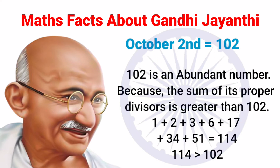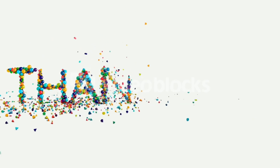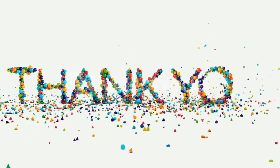Next, 102 is an abundant number because the sum of its proper divisors is greater than 102. The sum of the proper divisors of 102 is 114, which is greater than 102.